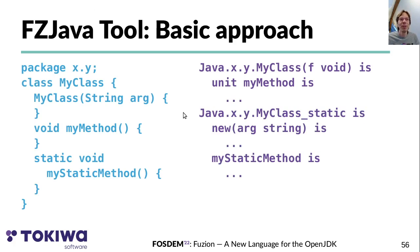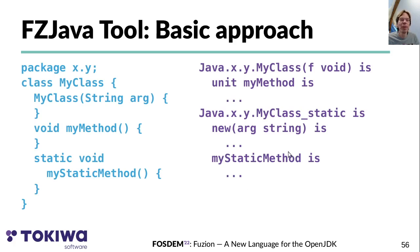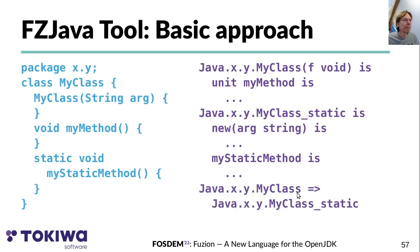For everything that is static — including constructors — a second feature is created. For constructors, features called 'new' are generated with the arguments as in the Java code, using intrinsic methods and reflection to create the corresponding Java instance. Static methods are implemented in a static feature 'my_class_static', and as shown before, a routine is also generated to provide a handy shortcut to access the features in that static feature.